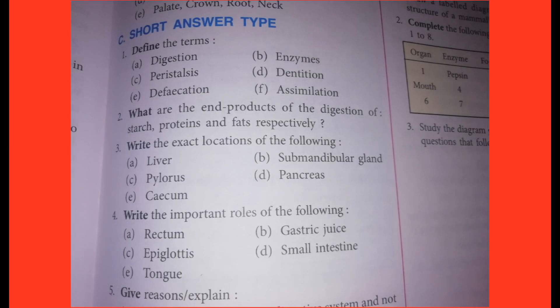Third one: Write the exact locations of the following. A: Liver. B: Submandibular gland. C: Pylorus. D: Pancreas. E: Caecum. Answers showing on screen.